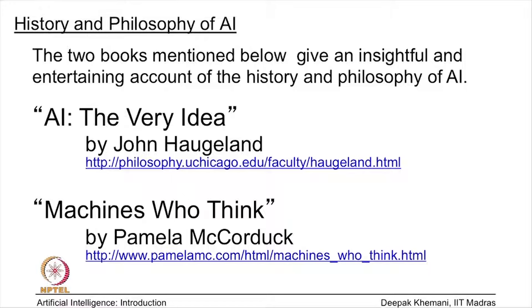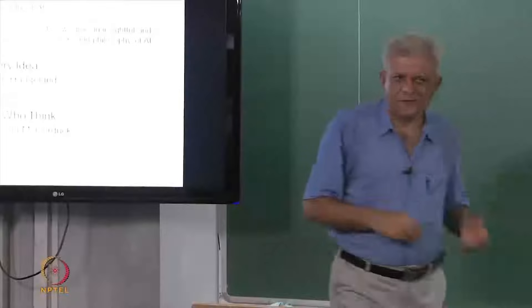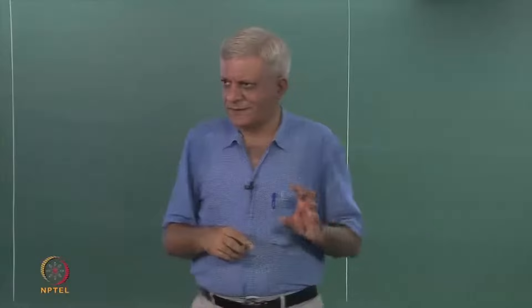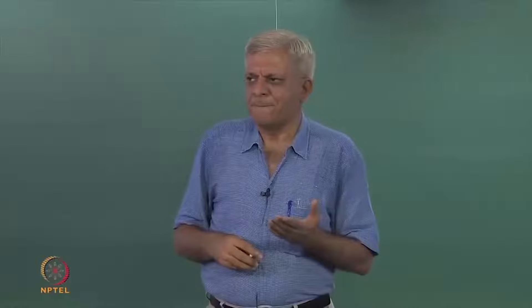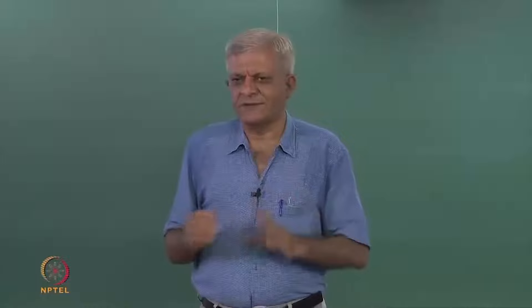I would recommend that you read at least portions of these two books. One is called 'AI: The Very Idea,' and we will discuss shortly why this book is different from the rest. John Hoagland is a philosopher by profession, not a computer scientist, and he is looking at the philosophical side of things. One of the key questions we will ask — and today we will start doing that — is: can machines think? I want you to start thinking about this question, and today we should discuss some of these basic concepts, like what is intelligence.